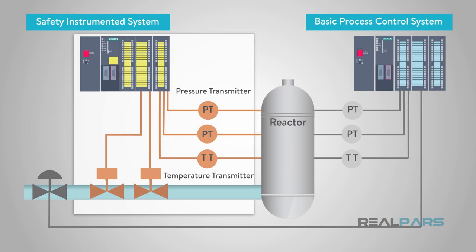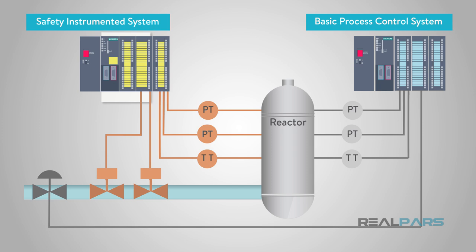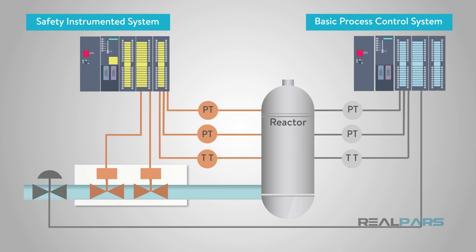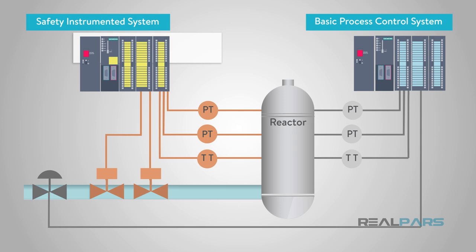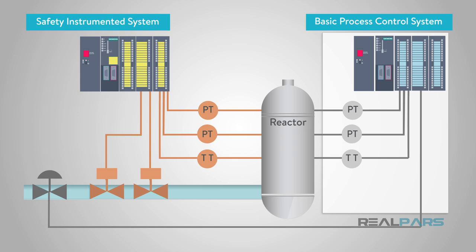A safety instrumented system is comprised of sensors, logic solvers, and final control elements, for the single purpose of taking the process to a safe state when predetermined conditions are violated. The SIS is a separate set of devices from the basic process control system. In order to provide a risk reduction factor of greater than 10 times, it cannot be interlinked with the basic process control system and any of the shortcomings of that system.